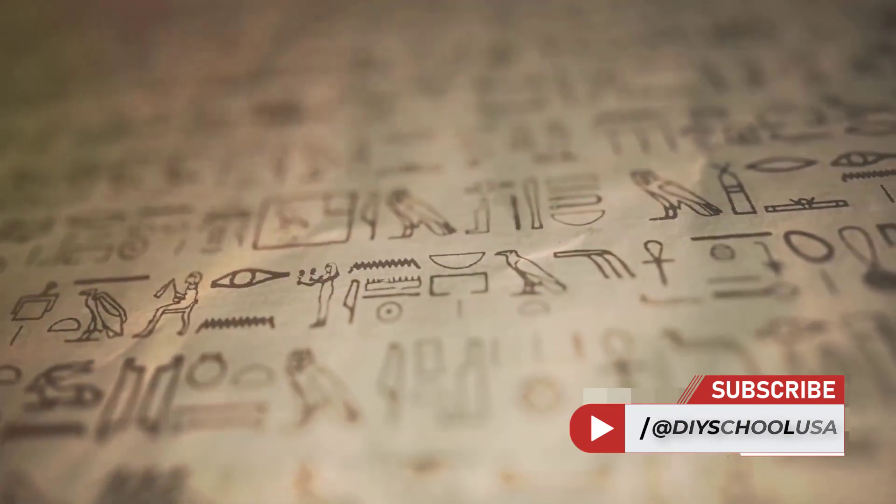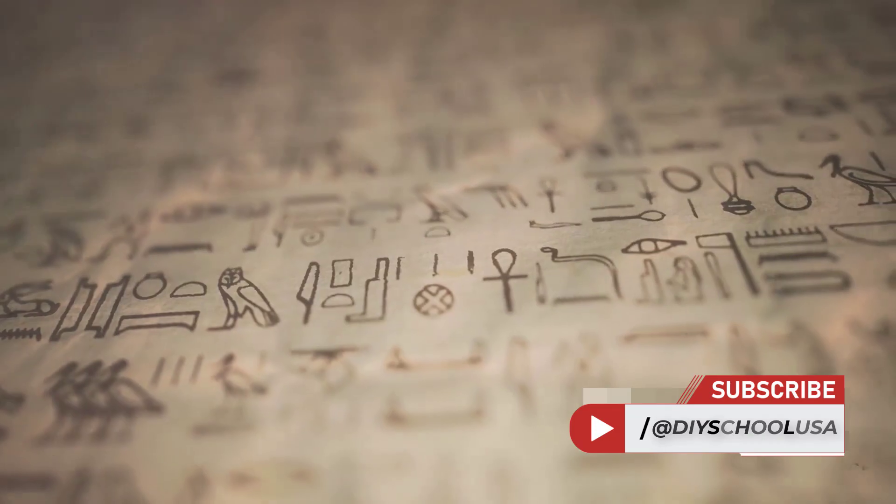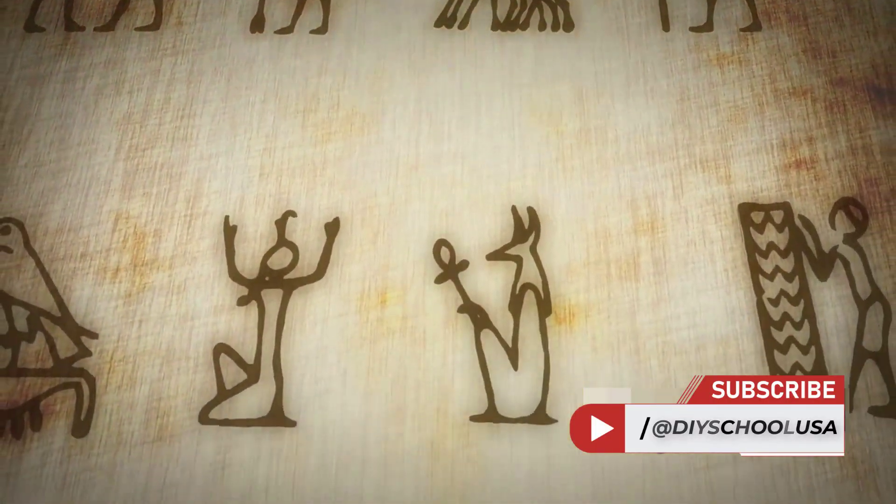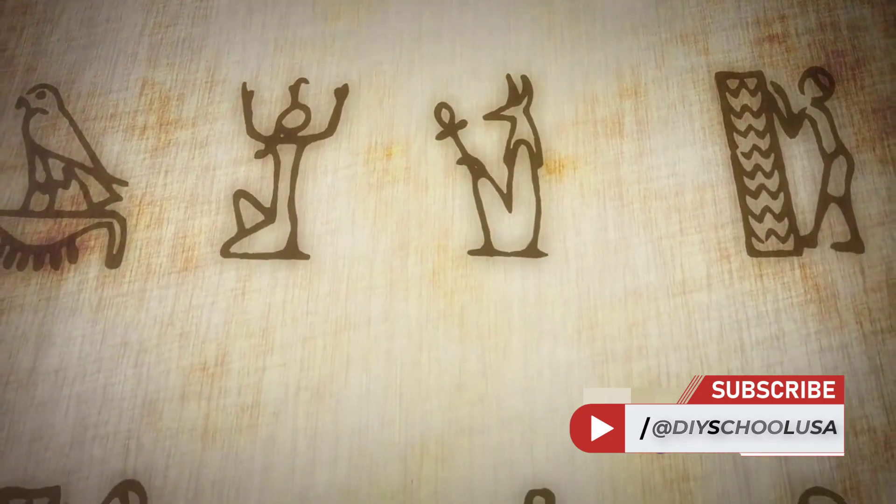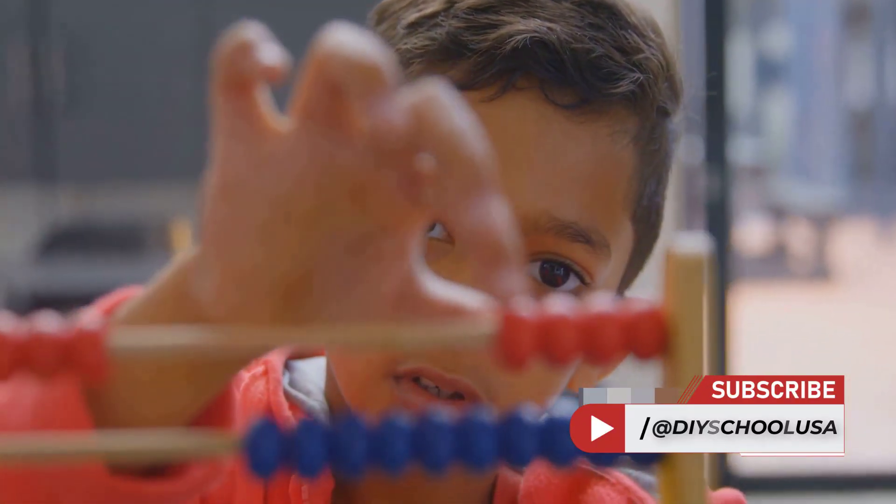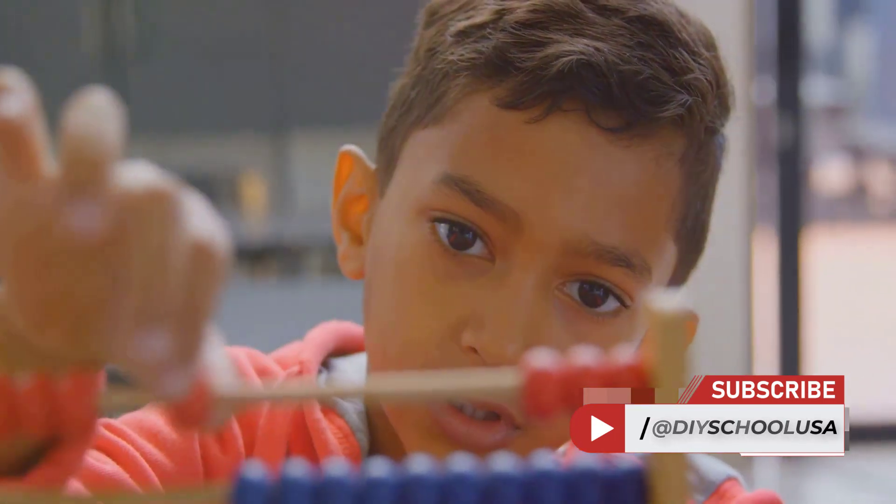Now you might be wondering, why 60? Well, the number 60 is a highly composite number, meaning it has more divisors than any smaller number. This made it immensely flexible and efficient for calculations, a feature that they leveraged to make significant strides in their mathematical pursuits.